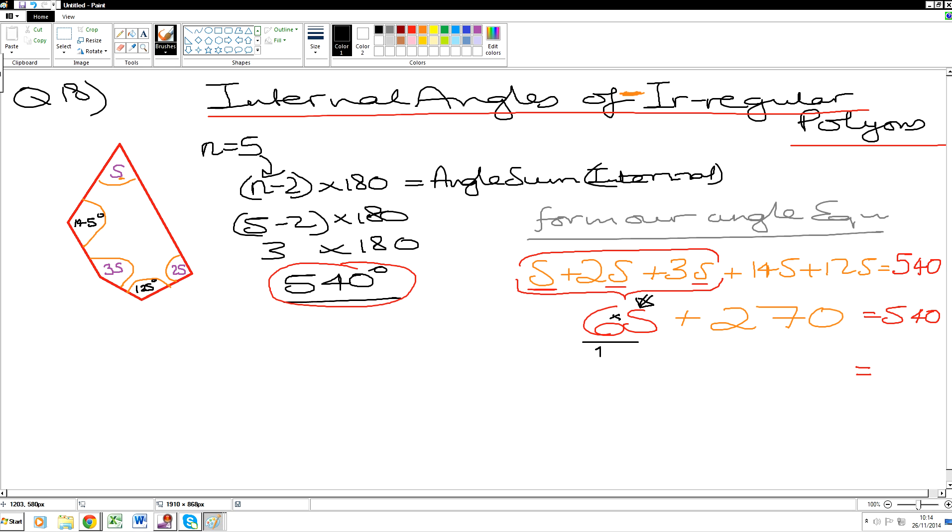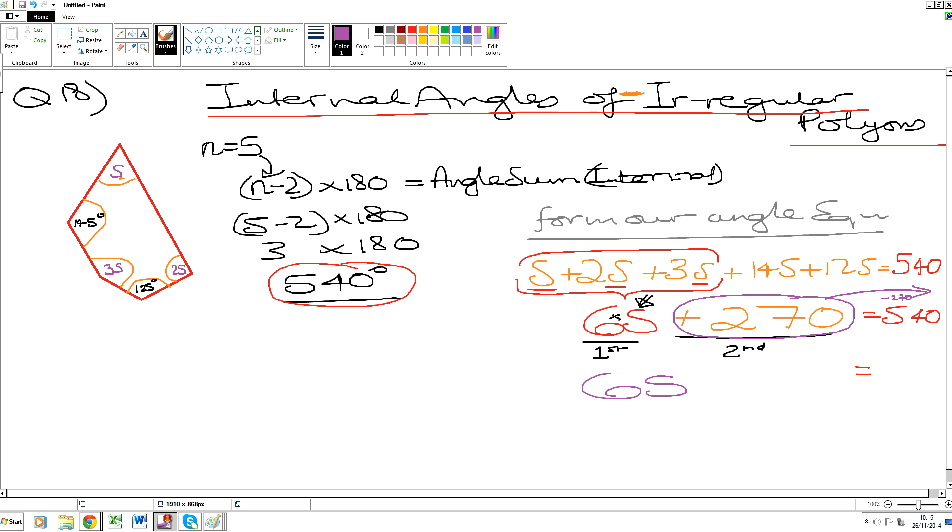We start at S. And then what do we do? We identify the actions. So time by 6 is called the first action. And then the plus 270 is called the second action. So we've started at the letter that we want to work out the value of. We've identified what's been done to that letter. And now we have to solve it. What is the technique for solving? Now that we've identified first and second action, which action do I move first when solving? Do I move the first one first? Or the second one first? Well done. So we grab the second action. We start with it in reverse order. We move the last action first. The opposite of add 270 is minus 270. So work that out. So we have now 6S is equal to 540 minus 270.